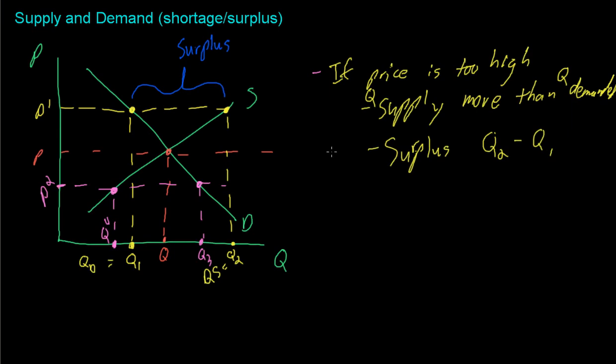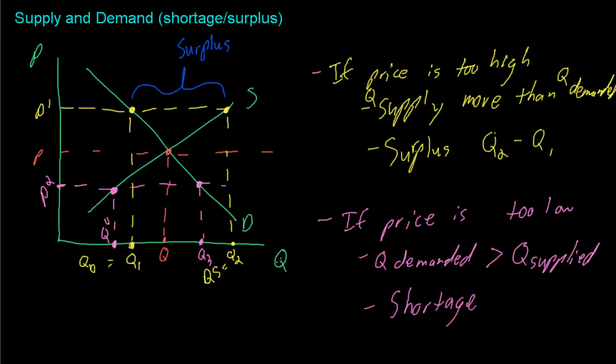And then also if price is too low, then the quantity demanded, I'm just going to write greater than, is greater than the quantity supplied. And that is called a shortage. And in this diagram over here, that would be Q3 minus Q4.